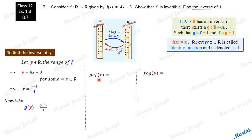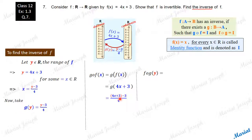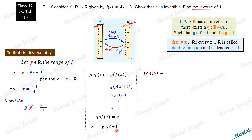For gof: gof(x) = g(f(x)) = g(4x + 3). The g rule says g(y) = (y − 3) / 4, so applying it: g(4x + 3) = (4x + 3 − 3) / 4 = 4x / 4 = x. So gof(x) = x, meaning gof is the identity function.